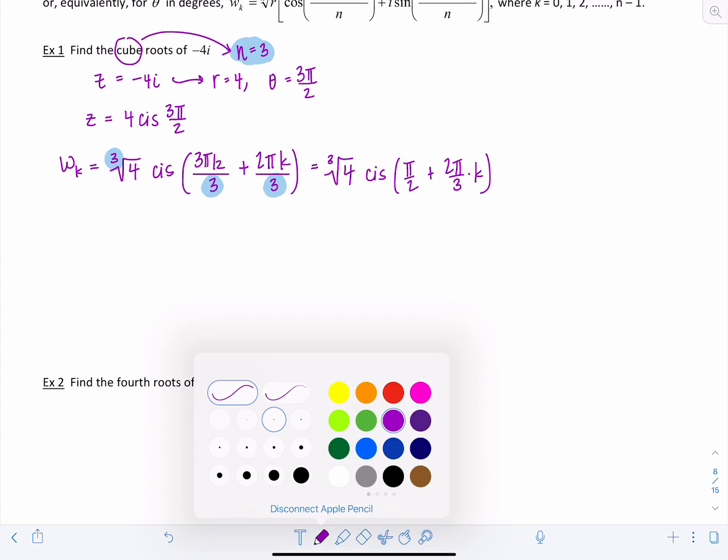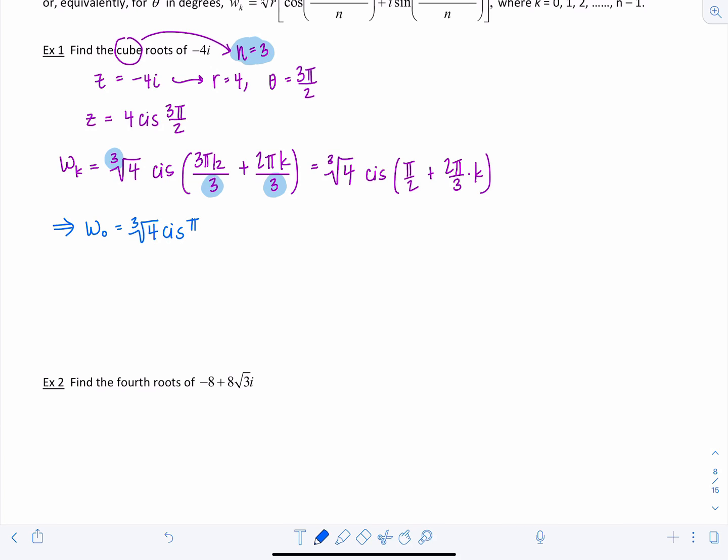So here we go, so that means the first root w sub 0 that would be the cube root of 4, cis pi over 2, and then I'm just plugging in 0 for k there, so that's it, that's the first one.